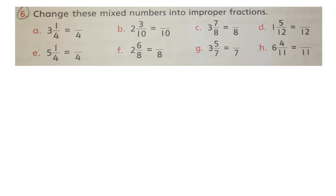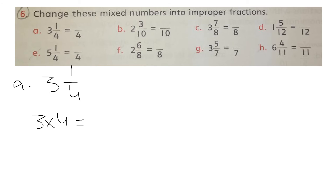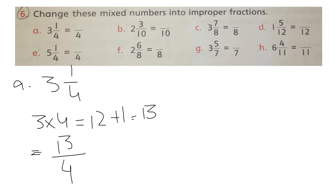Part A: 3 whole 1 by 4. Multiply 3 by 4 — that is 12 — then add 1 to get 13. The answer is 13 by 4. The denominator stays the same. Part B: 2 whole 3 by 10. Multiply 2 by 10 to get 20, then add 3 to get 23. The answer is 23 by 10.